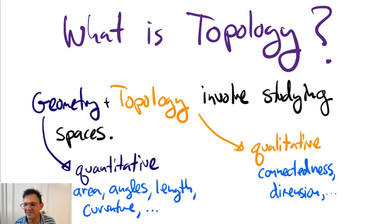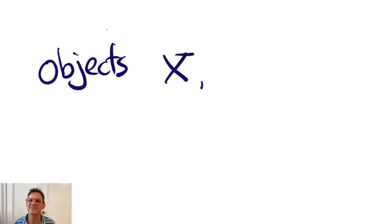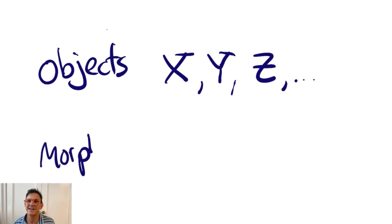Now, before I get into some things that are specific to topology, let me say some things that are general. Often in mathematics, we're interested in objects, say X, Y, and Z, and relationships between the objects called morphisms. And we denote those with arrows.